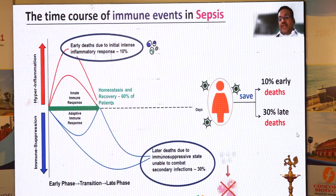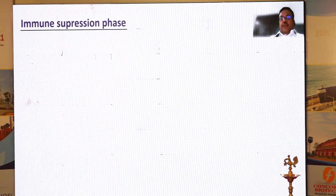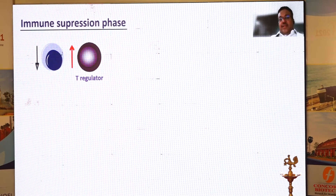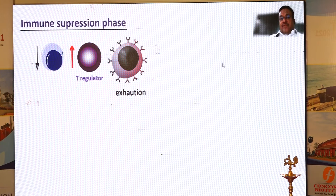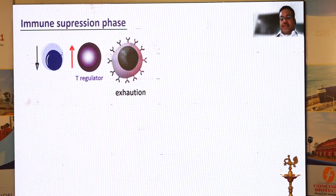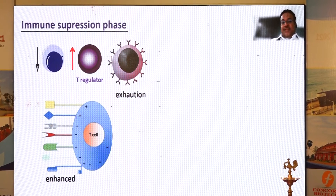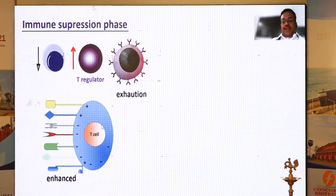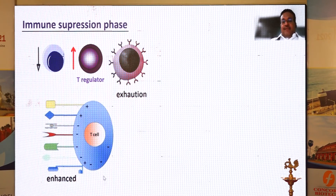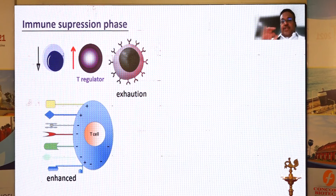Our whole effort right now has changed to focusing on how we could possibly prevent this immune suppression phase, where the majority of deaths happen. In the immune suppression phase, there is a reduction in lymphocytes and an increase in regulatory cells. What has been found is that because of excessive receptor expression by lymphocytes, these cells go into exhaustion and there is no more active response from these lymphocytes. These are all surface markers which the cells express.